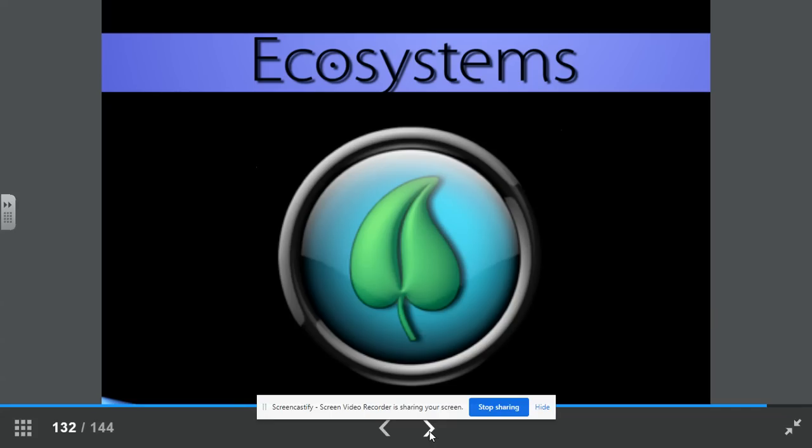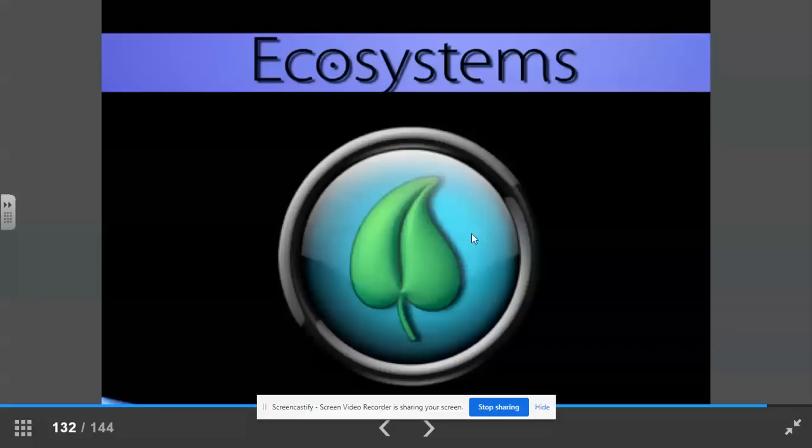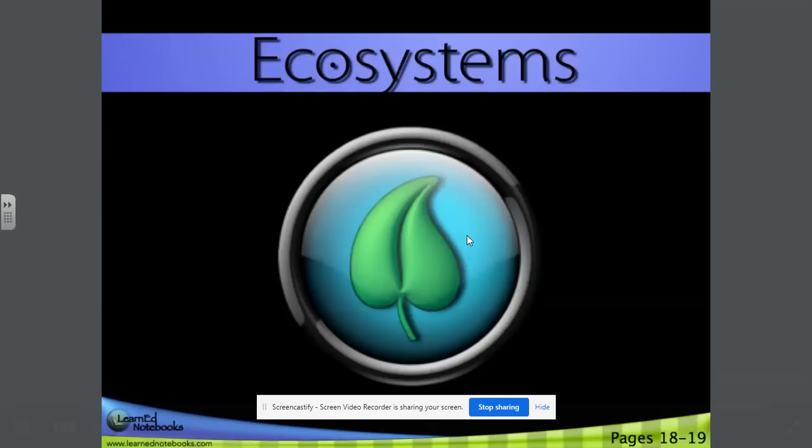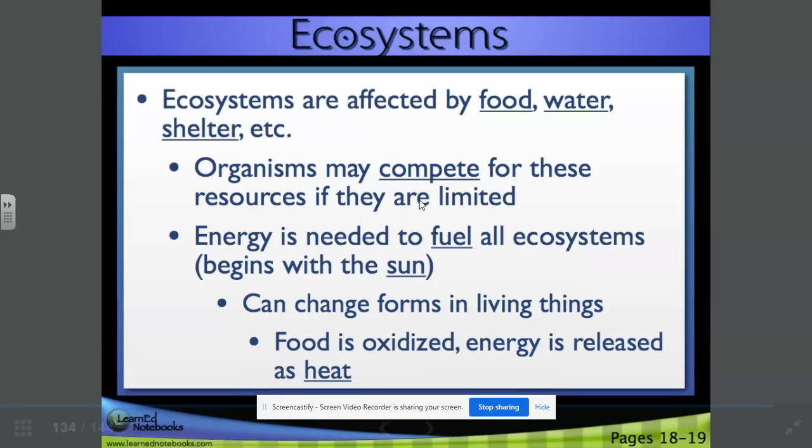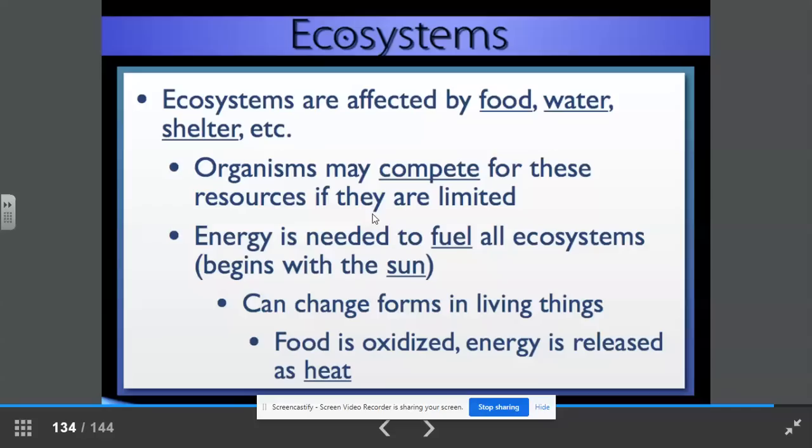This is it. Our last unit in our review. Ecosystems. We are on page 18 in our notebook. Let's begin. Ecosystems are affected by food, water, and shelter. Think about it. What is a habitat? A habitat is a place where organisms live. It is specialized for that organism. Organisms may compete for these resources, such as food, water, and shelter, if they are limited.